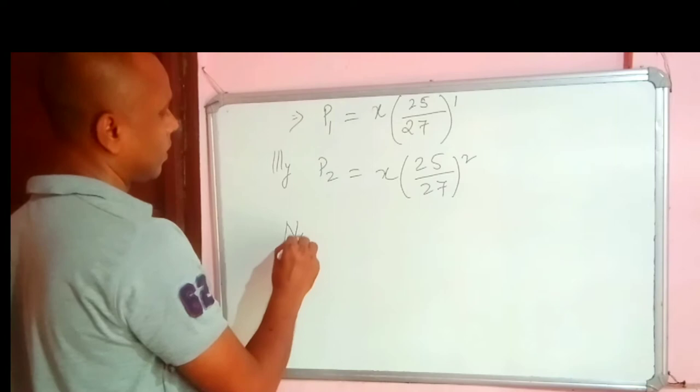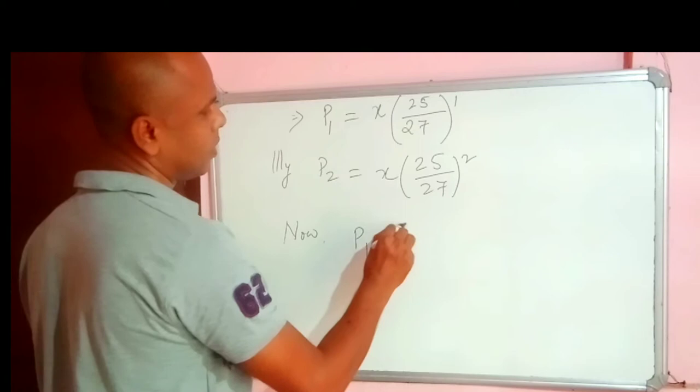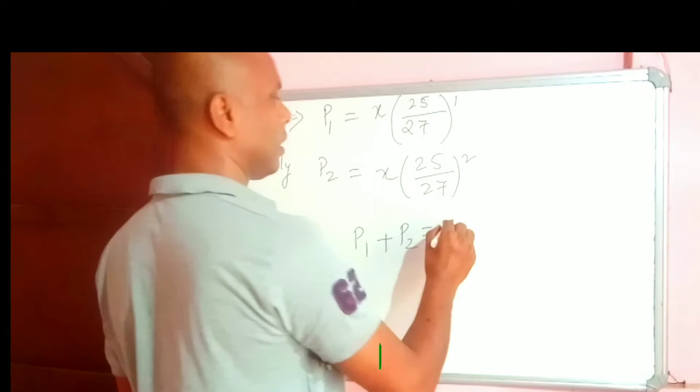Now P1 plus P2 is equal to the balance remaining we are having here 13,000.